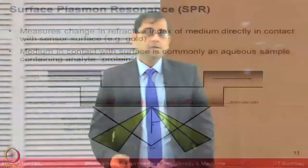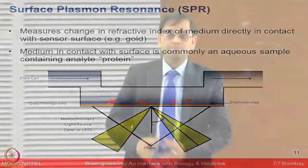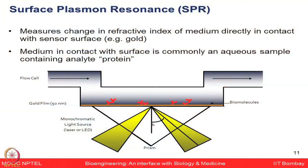One of the platforms which is quite popular in the field is surface plasmon resonance, or SPR. SPR measures changes in the refractive index of the medium which is directly in contact with the gold surface. Based on measuring the percentage reflectivity change, you can monitor whether a binding event is happening or not, which can be measured in the form of a sensorgram that plots changes in the SPR signal versus time.